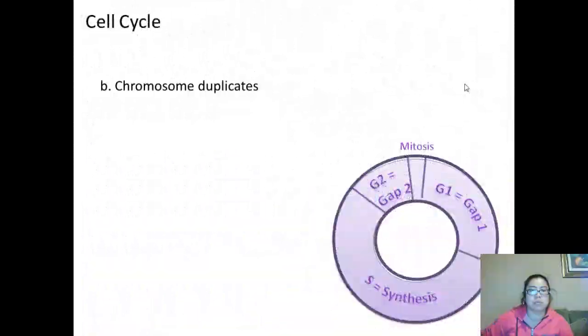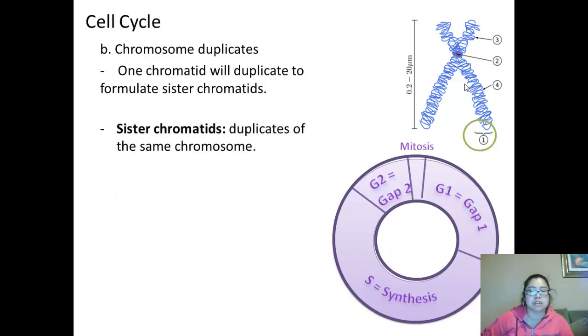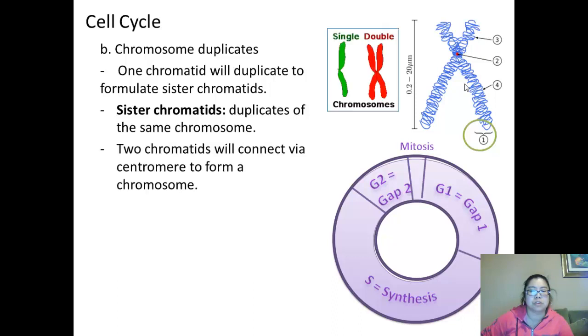The chromosome duplicates. Then one sister chromatid will duplicate to form sister chromatids. So here, you have a chromosome. The number one will indicate that one side is a chromatid. Sister chromatids are duplicates of the same chromosome. Here, in green, you have a single chromatid, or chromosome. Then they will double itself and form sister chromatids. When the two chromatids connect, it will connect through a thing called centromere to form a chromosome.